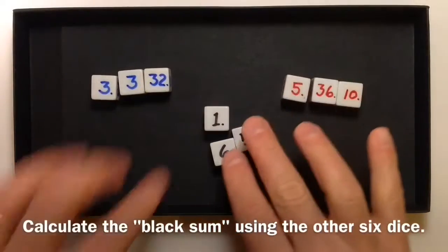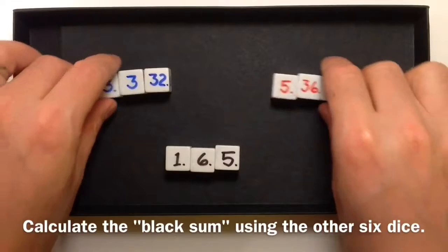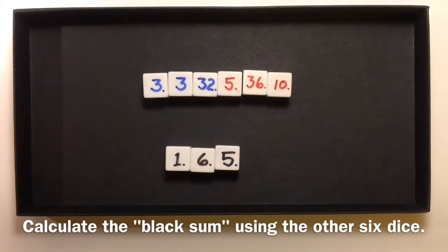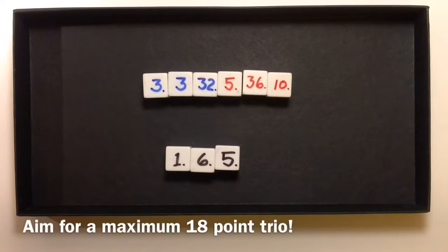And finally, we add up the numbers on the black dice. We have 12 from this roll. And then I want to try to calculate 12 using all six of the other dice. So you can get up to 18 points as a maximum for the game.